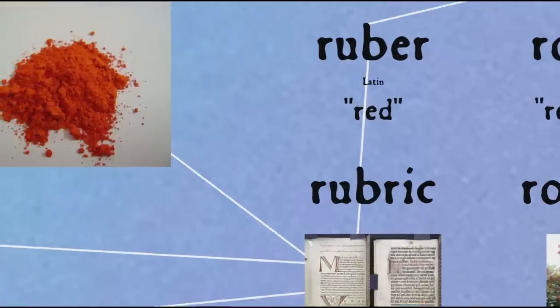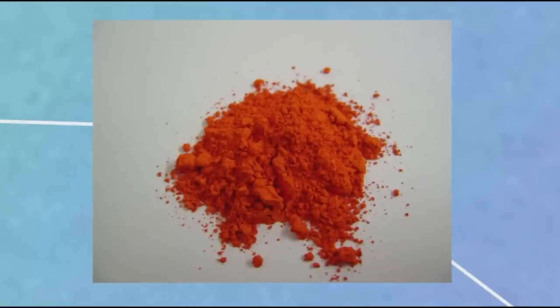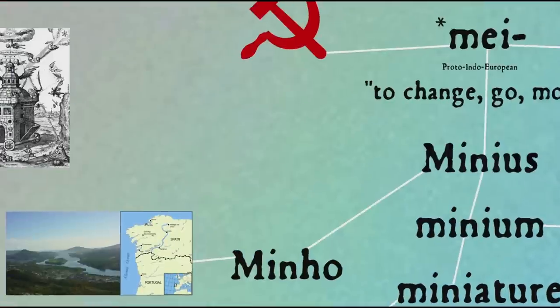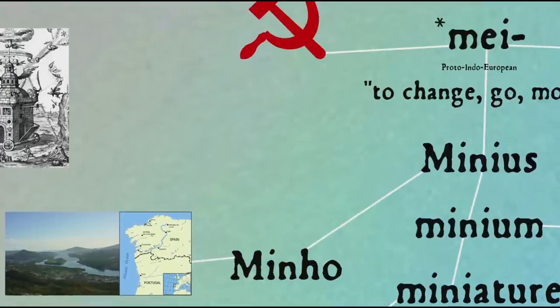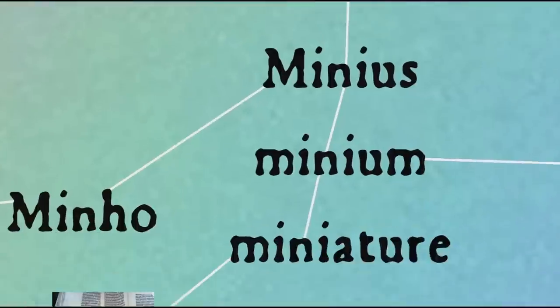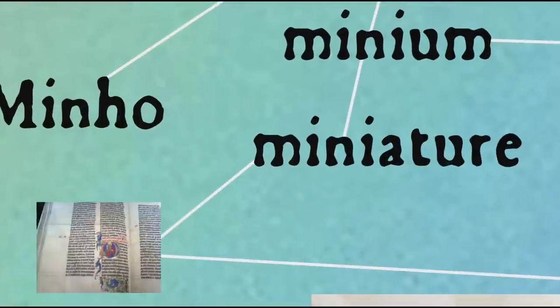The word 'minium' comes from the river Minius (now called Minho) at the Spanish-Portuguese border, and may ultimately come from the Proto-Indo-European root 'mei', meaning to change, go, move — also the source of words such as 'mad', 'mutate', 'mistake', 'communism', 'amoeba', and 'migrate'. Minium gives us our English word 'miniature', which originally had nothing to do with smallness and is unrelated to 'minute' and 'minimum', through Italian 'miniatura', since sections in manuscripts were also divided off with ornate illustrated capitals.